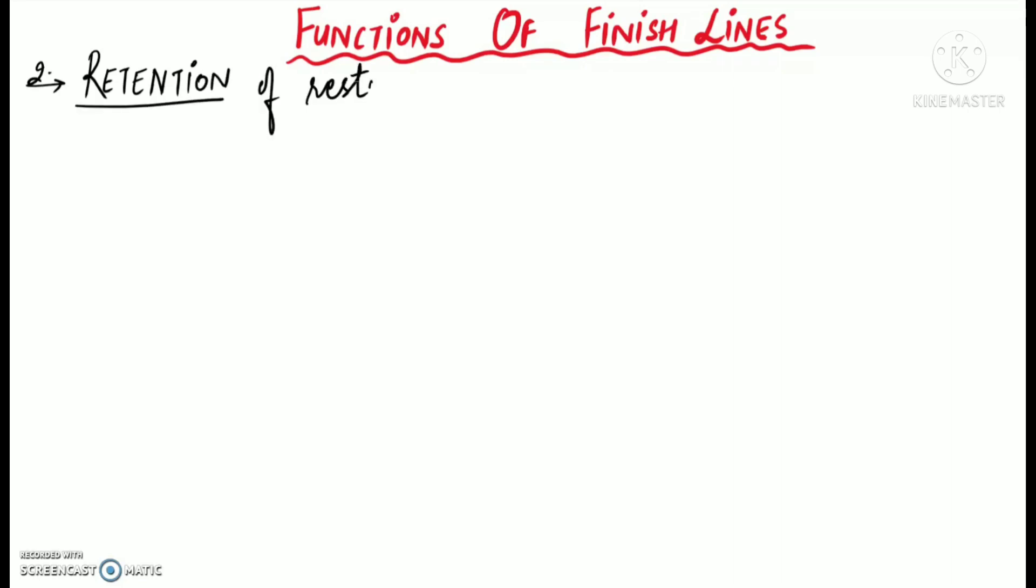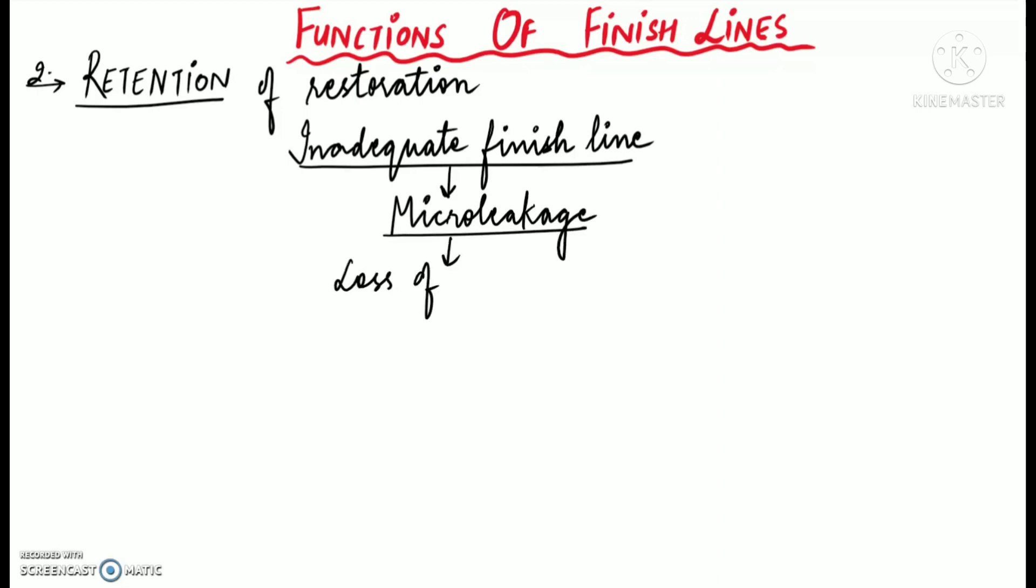So a properly prepared marginal finish line is really very important for the retention of the dental restoration. As I've already discussed, an inadequate finish line can lead to micro leakage. Why? Because an inadequate finish line creates a barrier which is incapable of preventing the cement from coming in contact with the oral fluids, therefore resulting in loss of retention.